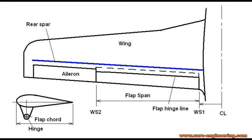To maximize the flap area, it should extend from the inboard end of the aileron to as close to the fuselage as practical. The flap shown here has a constant chord, which simplifies building it, but its relative chord varies because the wing is tapered. We also need to consider some practical aspects when sizing the flap. The flap hinges will be attached to the wing structure, which consists of ribs and rear spar. It simplifies things if the flap chord is not too different from the aileron chord, so that a straight rear spar can be used.